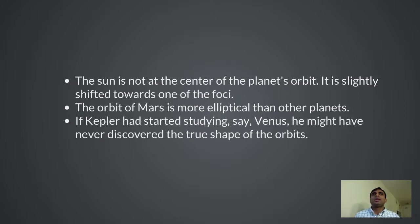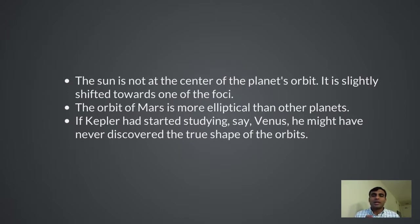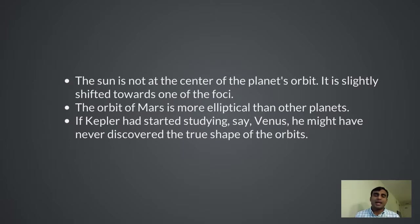The reason why Mars's orbit is so puzzling is because it is the most elliptical in the solar system. Earth also has an elliptical orbit, but it is very close to a circle — you can't really tell it isn't a circle. Thankfully Kepler studied Mars, because had he studied Earth or Venus, he might not have reached this conclusion and might never have discovered the true shape of orbits, sticking instead with circular orbits.